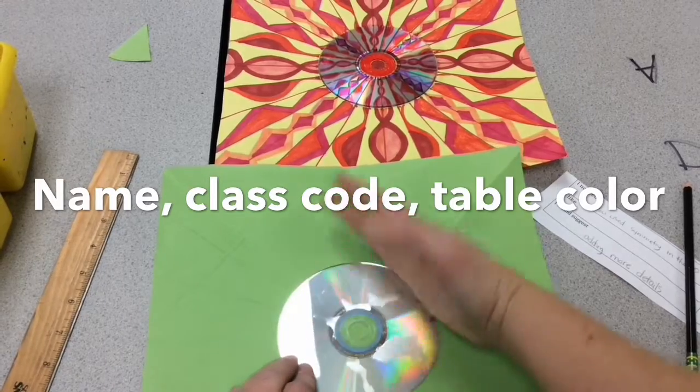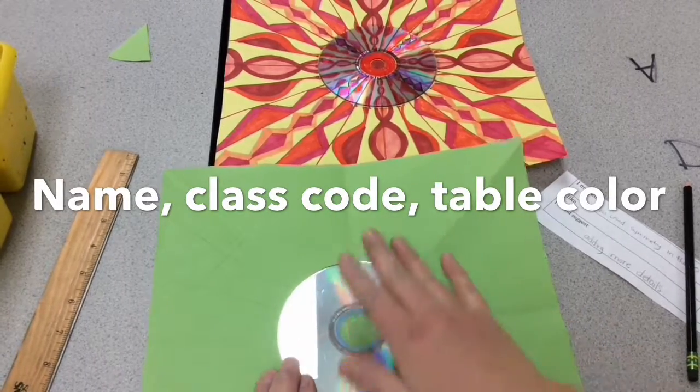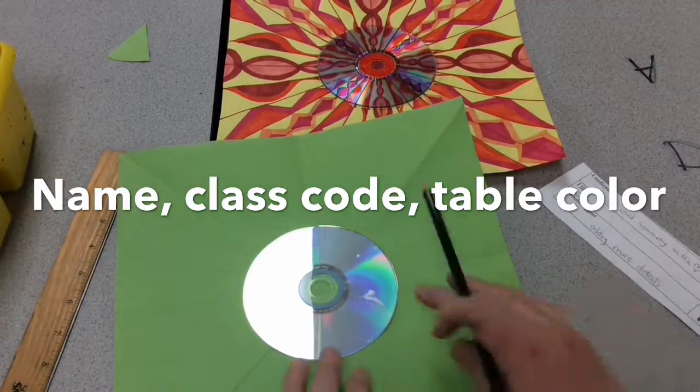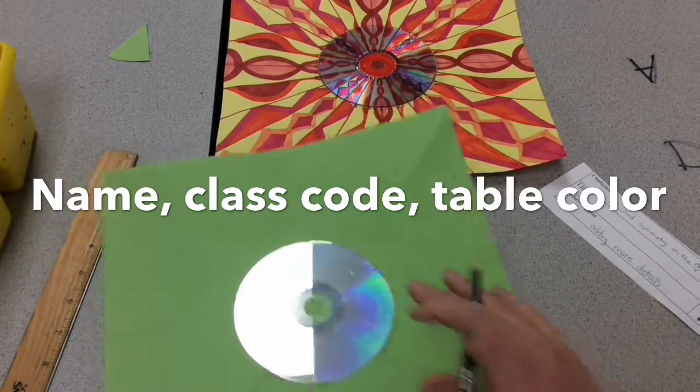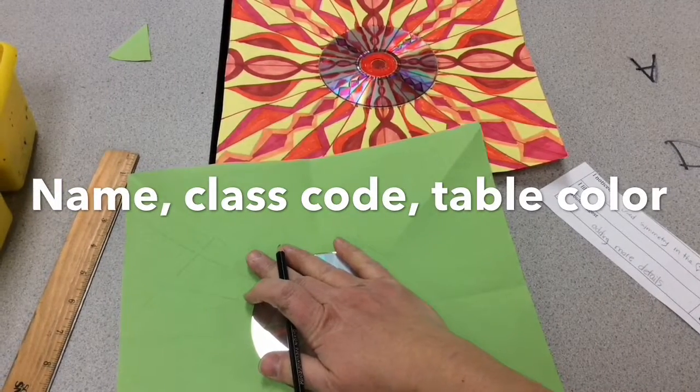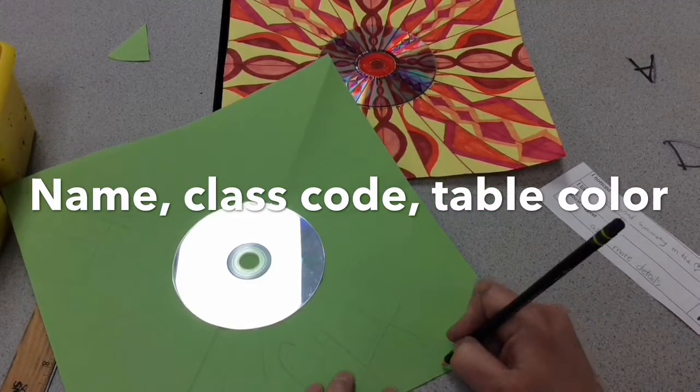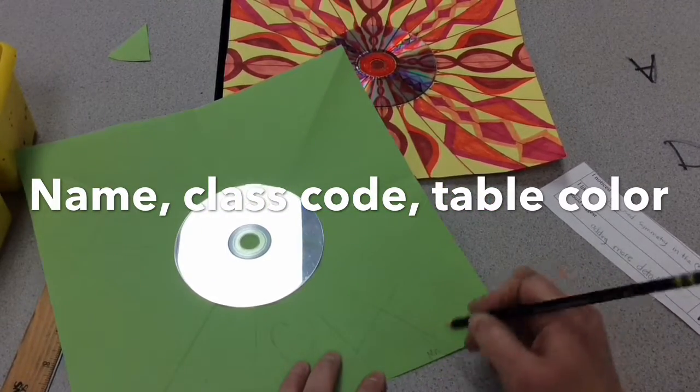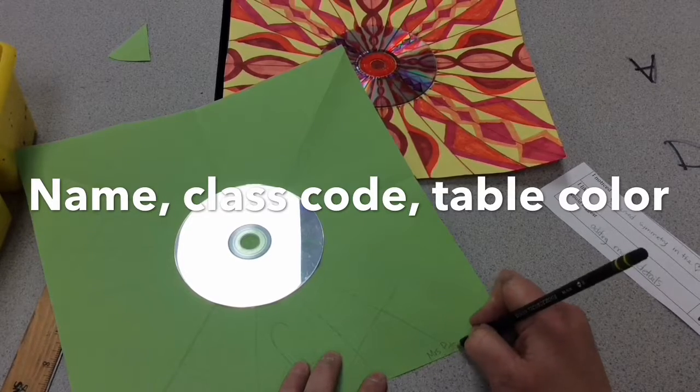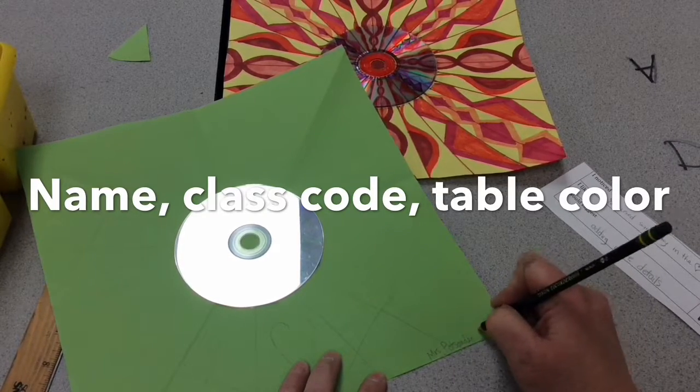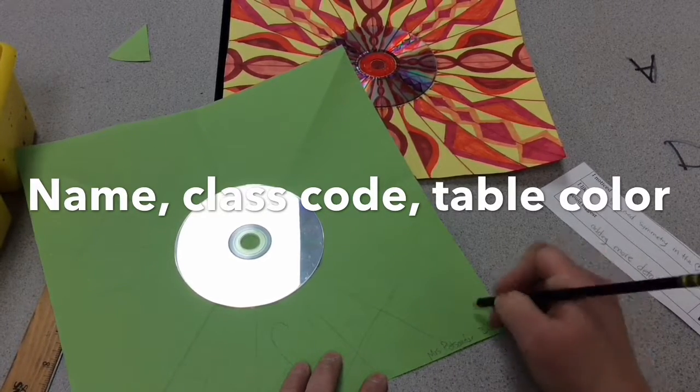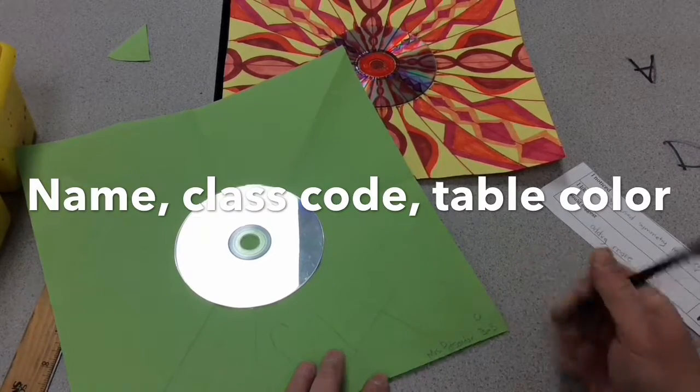And then make sure your name, I should have told you before, make sure your name is on your paper. On the back of your paper or just in the corner on the front. Make sure your name is on your paper. Also put the color table that you're sitting at. So if I'm doing this one, my name is Mrs. Pot Sander. If I'm in brown, fifth grade class, I put my class code. And if I'm at the orange table, I'm going to put O for orange.